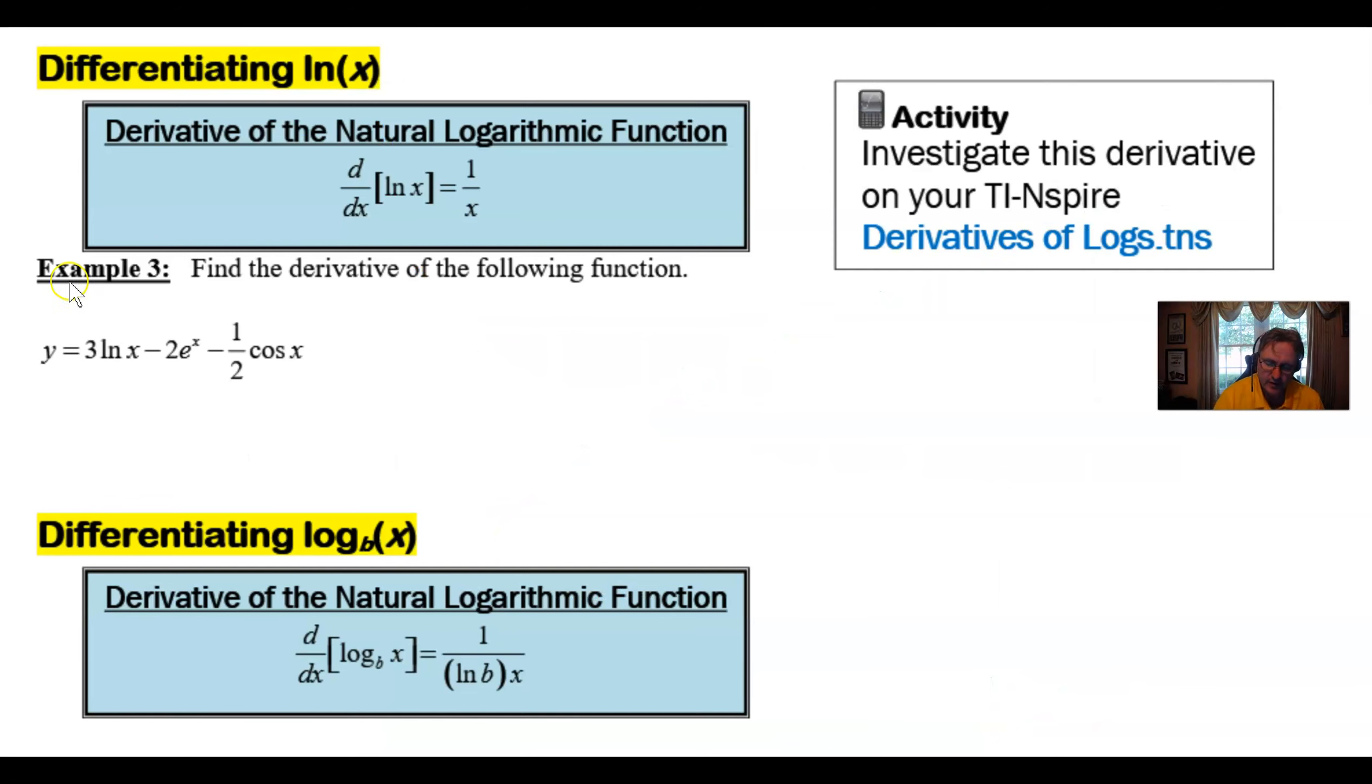So here we are with our first example in this group of problems, example 3. And we only have one part to this because I thought I could really emphasize what I'm trying to emphasize with one example. And you'll notice that I've kind of threw in a few other things from a review standpoint. So we have 3 times the natural log of x minus 2 e to the x minus 1 half cosine of x. So it's going to address three of our four formulas.